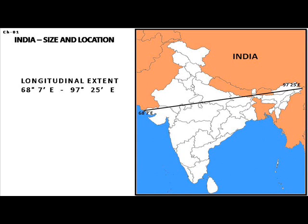From Gujarat to Arunachal Pradesh, there is a time gap of two hours. This means when people of Arunachal Pradesh start their routine work, people in Gujarat are getting ready to wake up. This happens because the Earth rotates from west to east, and places in the east receive earlier sunlight.